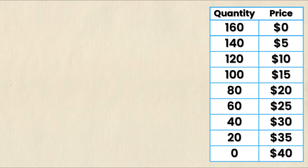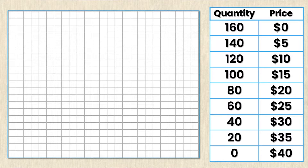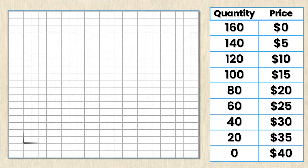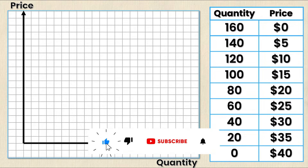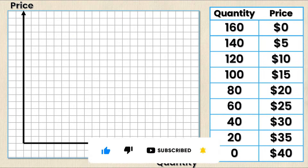In this particular video we're going to be using the demand schedule, and in another video we look at how to do the same thing but with a demand equation instead. The first thing we're going to need to graph precisely is some graph paper. Then we're going to start by drawing our axes and labeling them price and quantity respectively. This will always be the case — price on the y-axis and quantity on the x-axis.